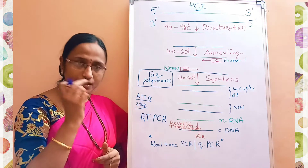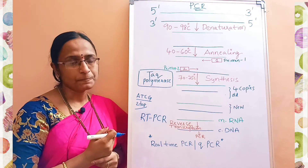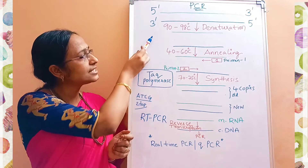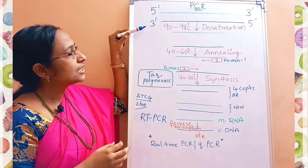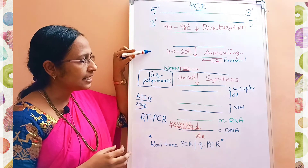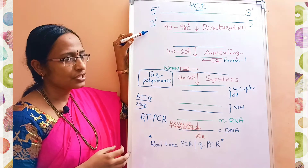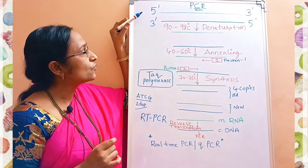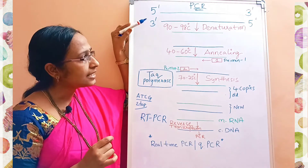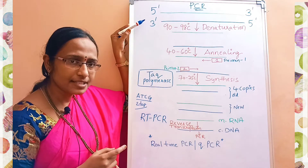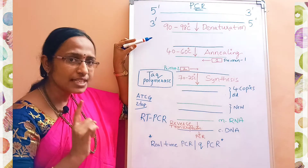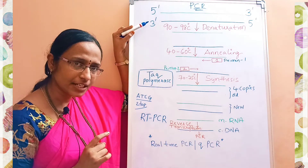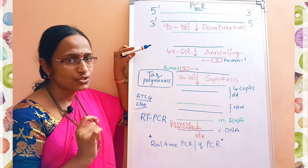Taq polymerase is isolated from a bacterium called Thermus aquaticus. Now we go with the methodology of PCR. PCR occurs in three steps. The first step is denaturation, the second is annealing, and the third is synthesis. In denaturation, the DNA strand — which is always a double helix with a 5-prime end and a 3-prime end — has to get separated into two single-stranded DNAs, one colored green and one colored blue.